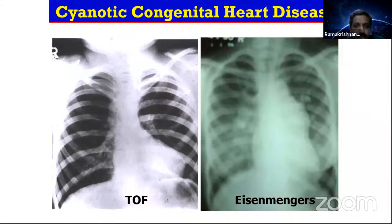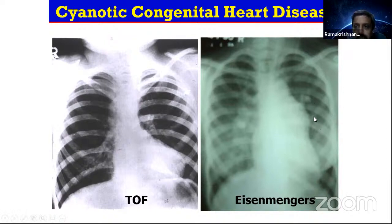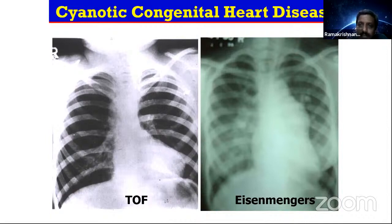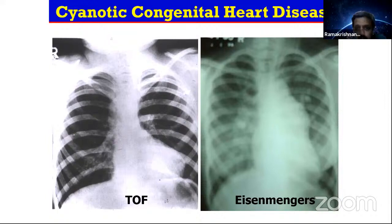On X-ray, tetralogy has the classic boot shape with reduced pulmonary blood flow. Eisenmenger has evidence of pulmonary hypertension but also telltale signs of previous increased QP — some dilated vessels especially in the central mediastinum may be more prominent, distinguishing Eisenmenger from idiopathic pulmonary hypertension. The peripheral lung fields will be generally oligemic in Eisenmenger syndrome also. Most common garden varieties of tetralogy and Eisenmenger syndrome will not have cardiomegaly.